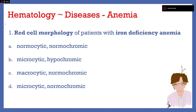Number one: red cell morphology of patients with iron deficiency anemia. Letter A, normocytic normochromic. Letter B, microcytic hypochromic. Letter C, macrocytic normochromic. Or letter D, microcytic normochromic. The answer here is letter B, microcytic hypochromic.